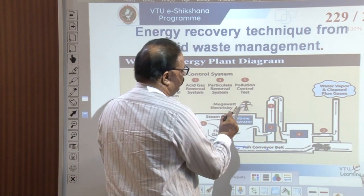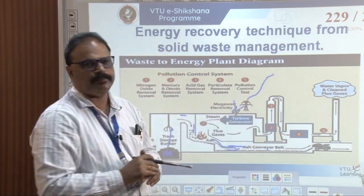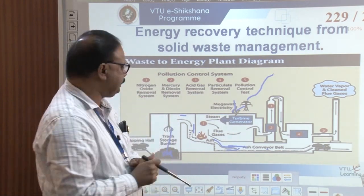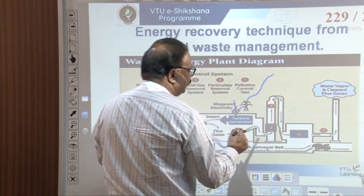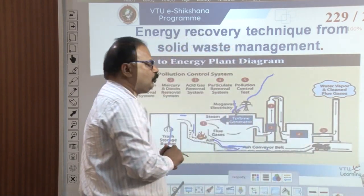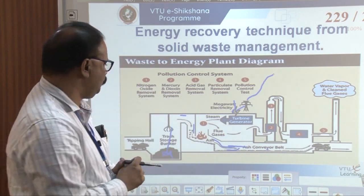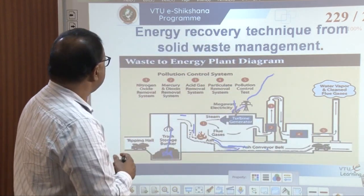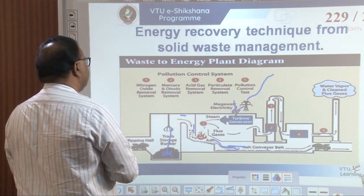The flue gas goes through a pollution control system. First, a nitrogen oxide removal system; second, a mercury and dioxin removal system where mercury and dioxins are removed from the flue gas; third, an acid gas removal system; fourth, a particulate matter removal system; and fifth, a pollution control test before releasing to the atmosphere. Clean water vapor and clean flue gas are produced through this process.